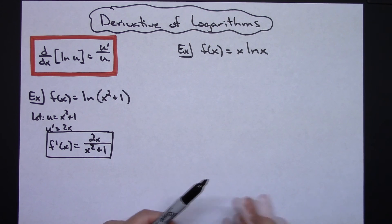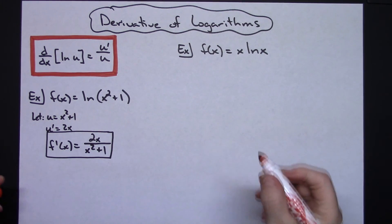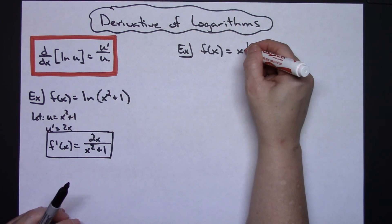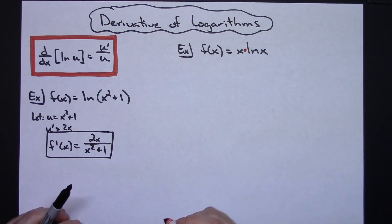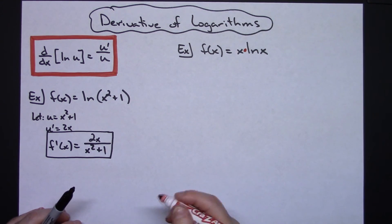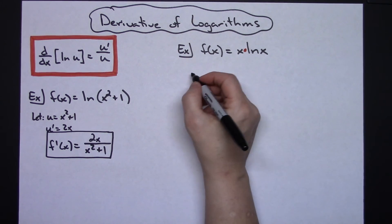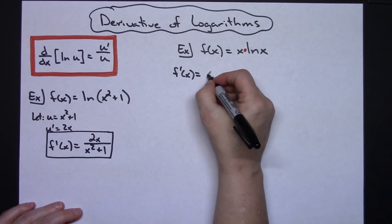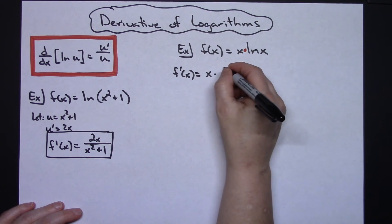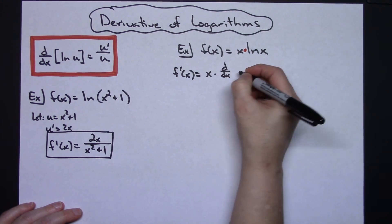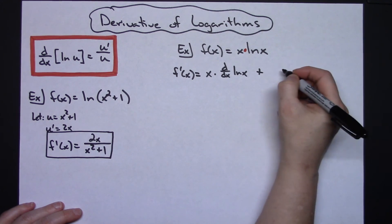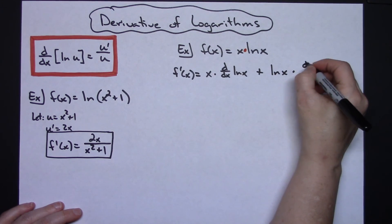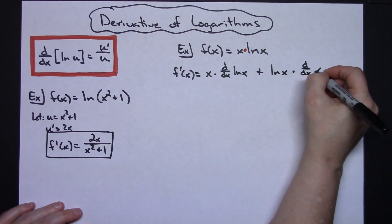Now let's take a look at this function: f of x equals x times the natural log of x. In this scenario I do have a product going on, so I have to implement the product rule. So f prime of x would be the first term, which is x, times the derivative of the second — d/dx of the natural log of x — plus the second term, natural log of x, times the derivative d/dx of that first term.